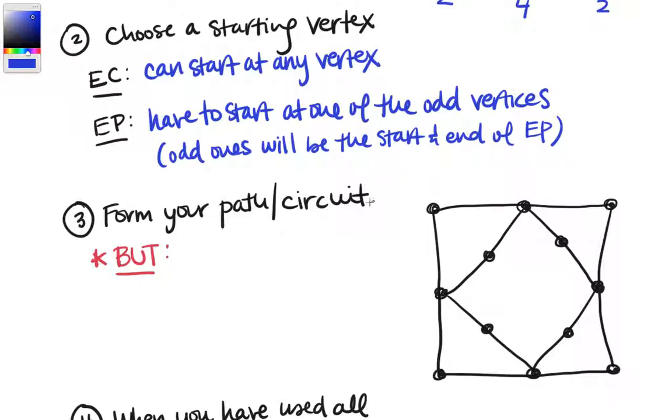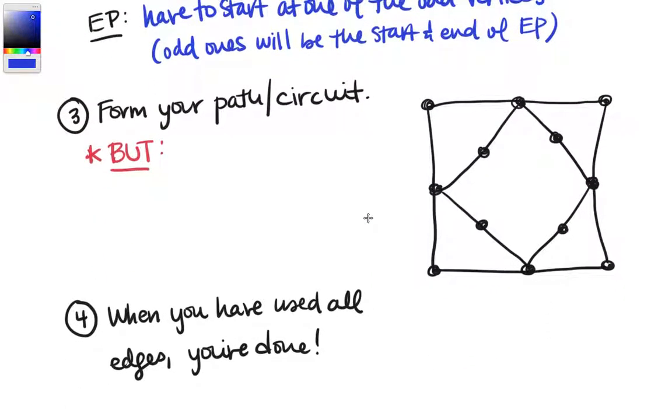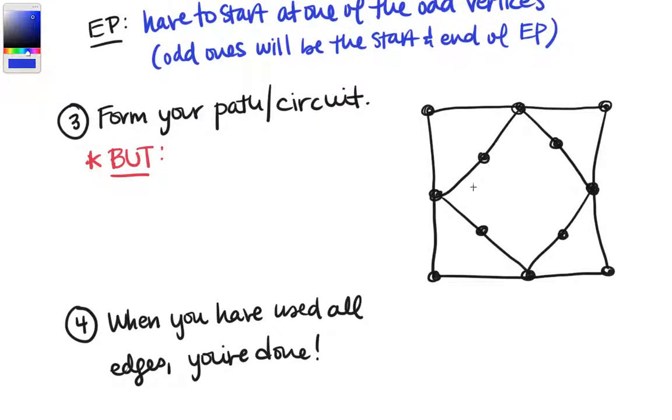So here's our example graph again. And we saw that all of the vertices are even. So we have a circuit in this case, which means we can start at any vertex. And let's just choose to start here in the upper left hand corner.